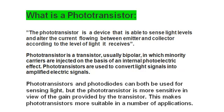Hi guys, in this tutorial I am going to explain about what is a phototransistor. The phototransistor is a device that is able to sense light levels and alter the current flowing between the emitter and collector according to the level of light. The phototransistor is a transistor, usually bipolar, in which minority carriers are injected on the basis of the internal photoelectric effect. The phototransistor is used to convert light signals into amplified electrical signals. This is the main function of the phototransistor.